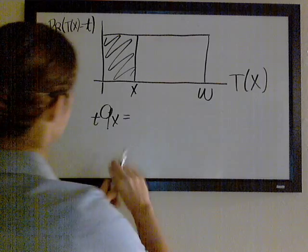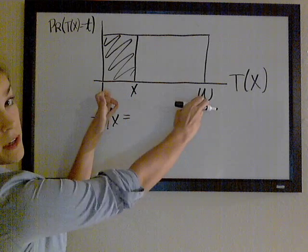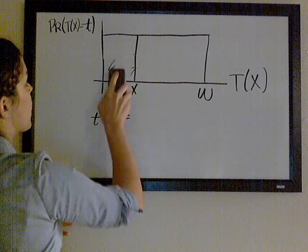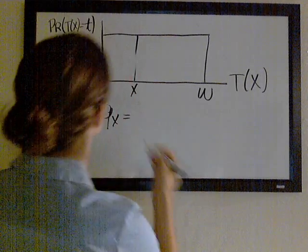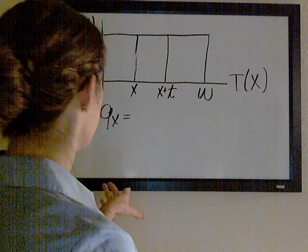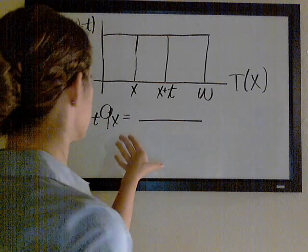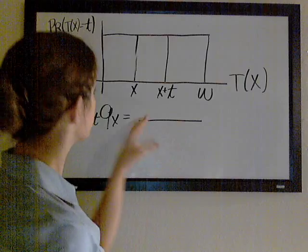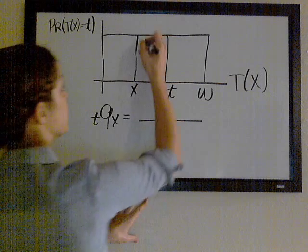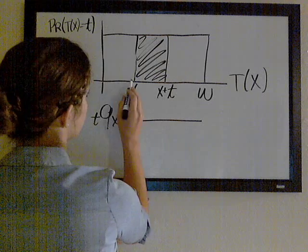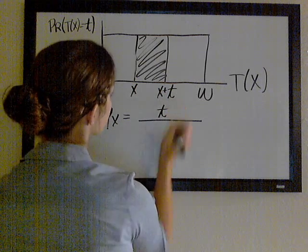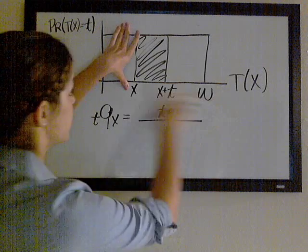What you're really doing is taking the length of this interval over the length of the interval in which you started. So back to tqx — you want to know the probability that your x-year-old fails to live t more years, which puts us at x plus t. It's again just the ratio of the lengths of those intervals: the probability that you fail to live the next t years means your future lifetime is somewhere in here. The length of this interval is t over the length of the interval in which you started, which is omega minus x.